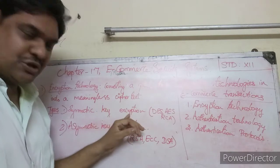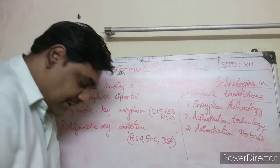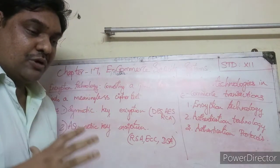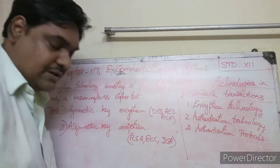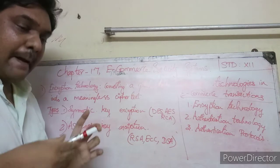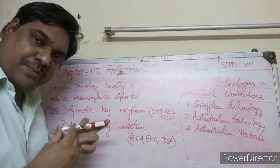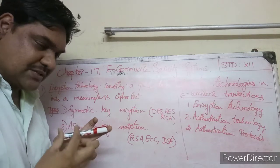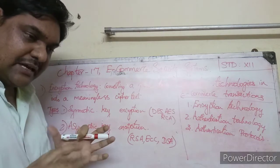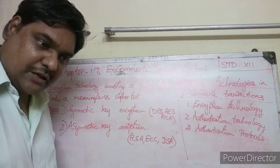In encryption technology, there are mainly two types: symmetric key encryption and asymmetric key encryption. In symmetric key encryption, information is processed — for example, 64 bits of information are taken at a time.